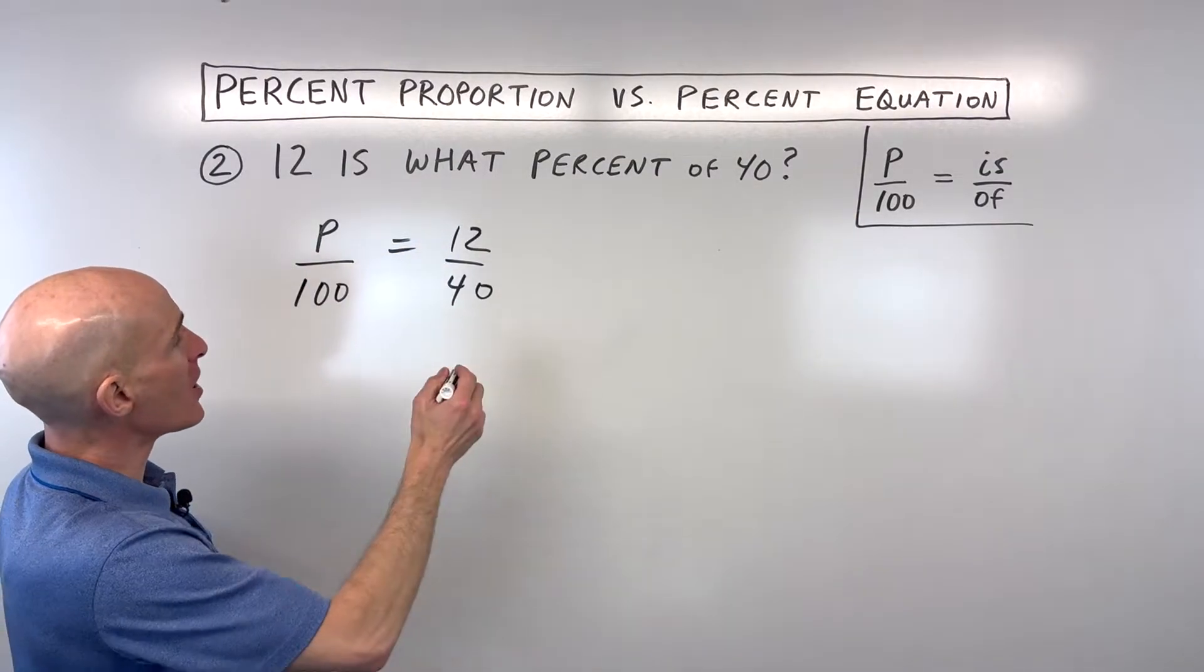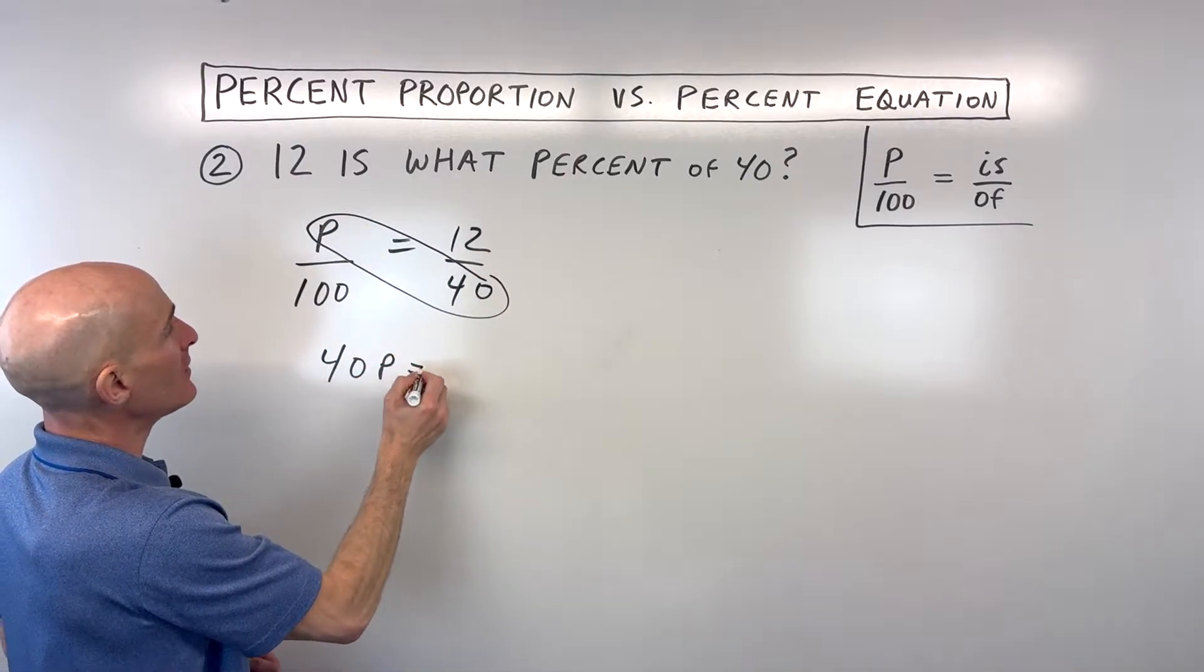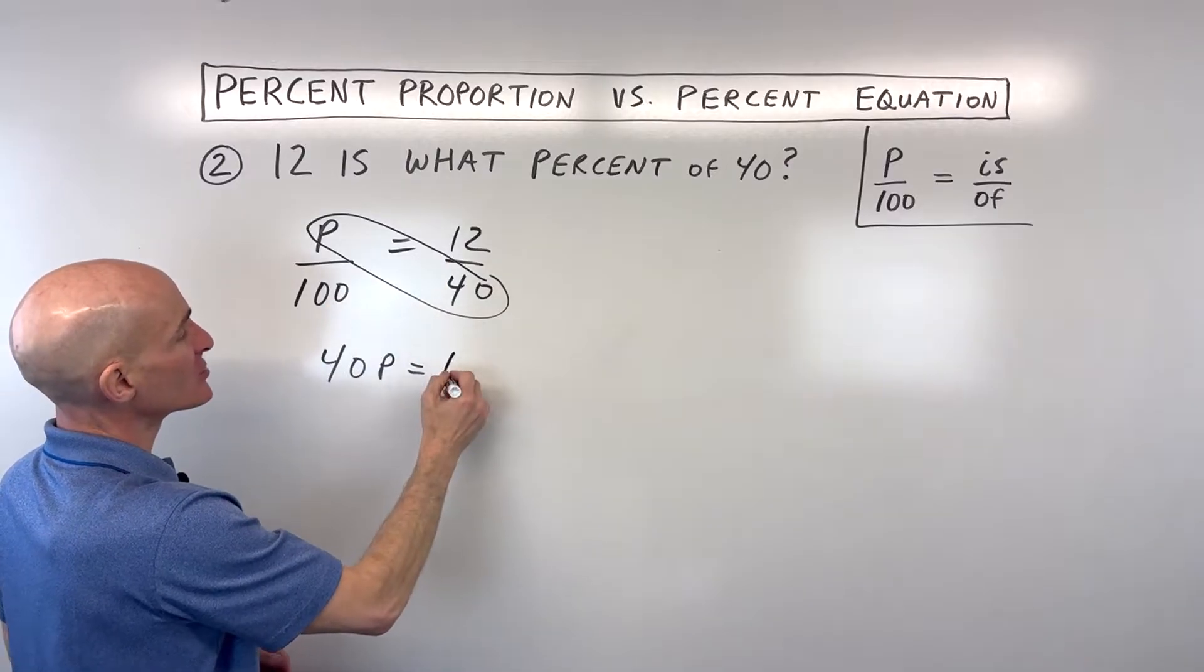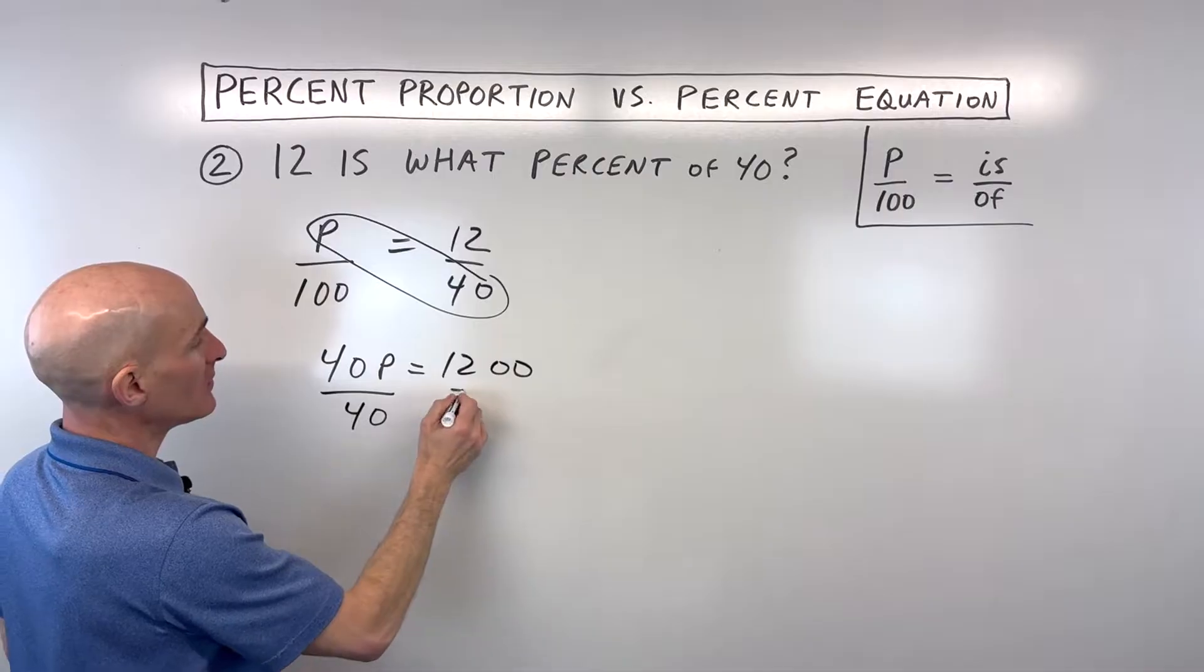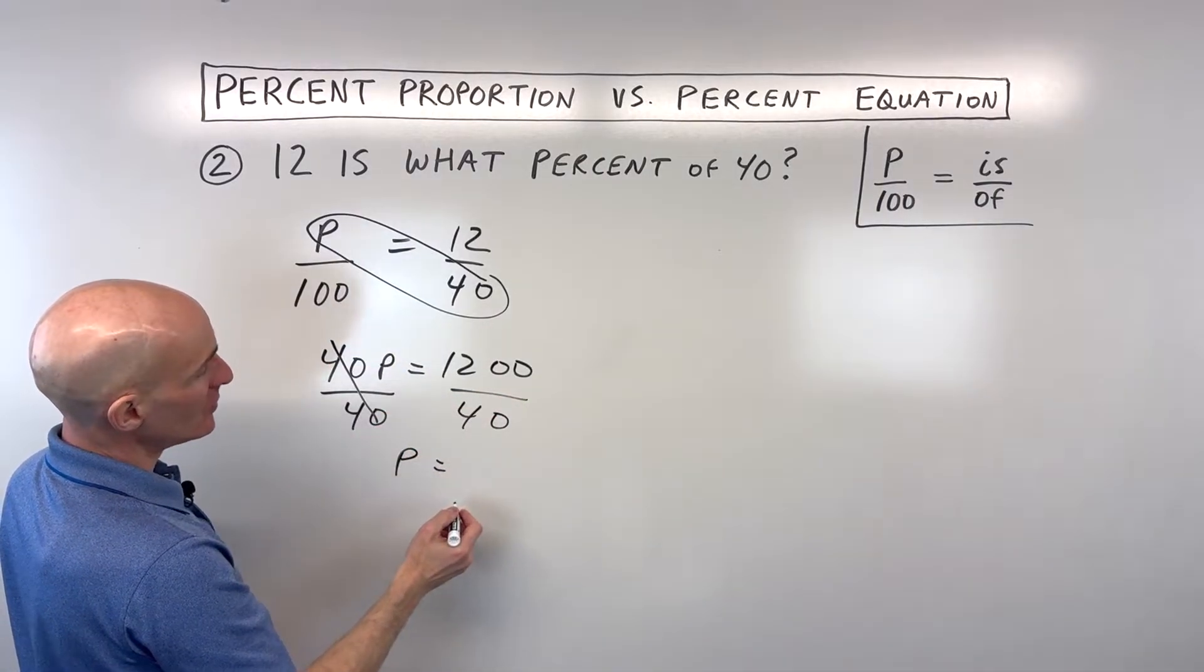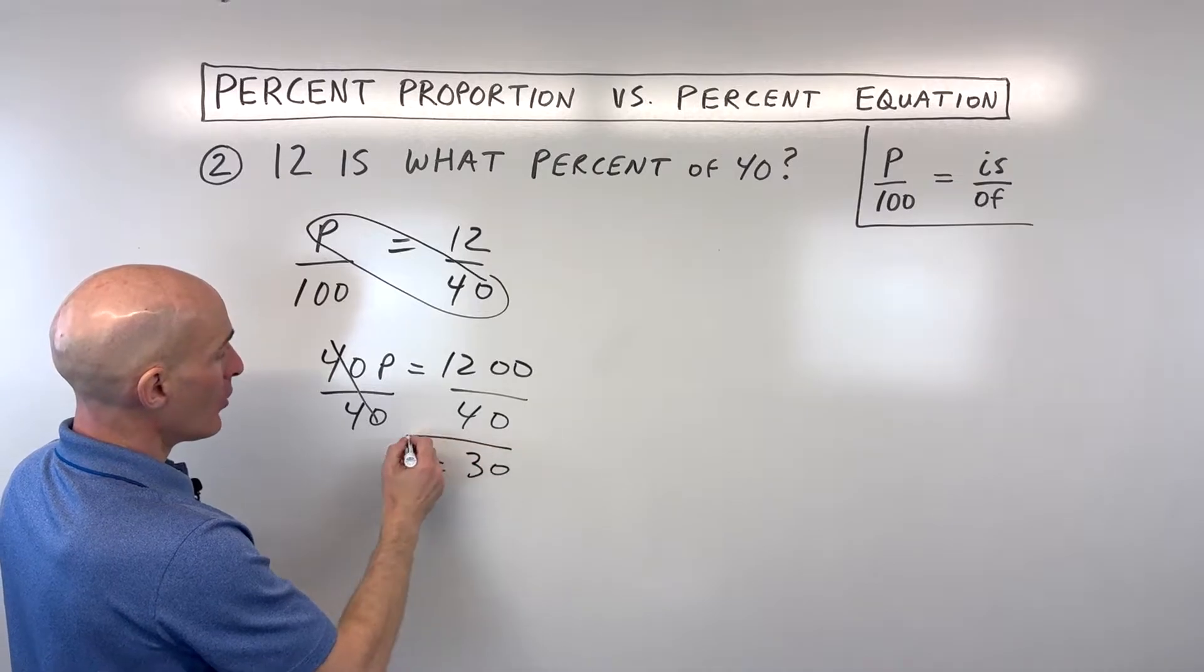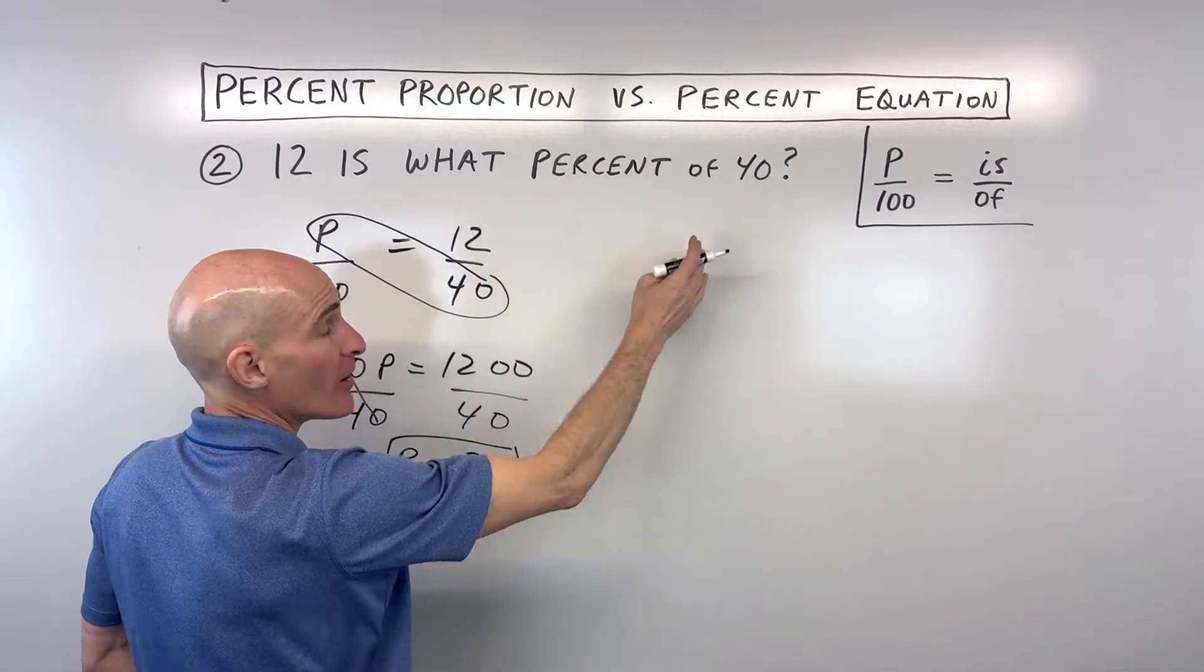Let's cross multiply. We have p times 40, which is 40p. 12 times 100 is 1200. Divide both sides by 40, and p equals 30. So that means 12 is 30% of 40.